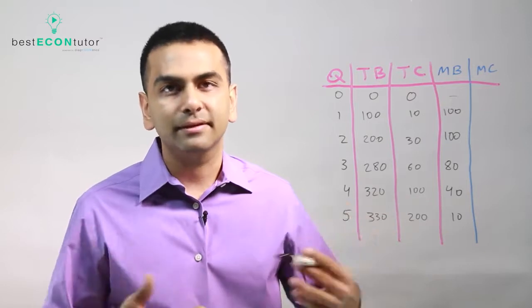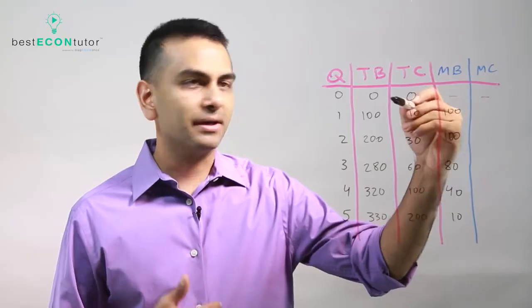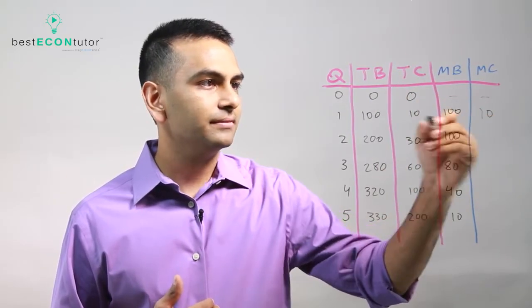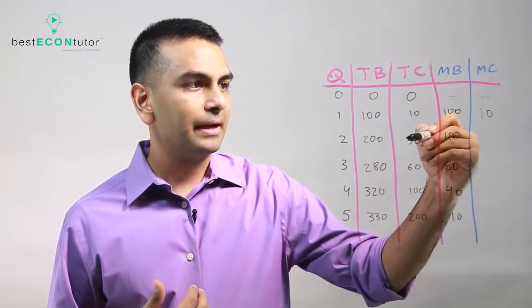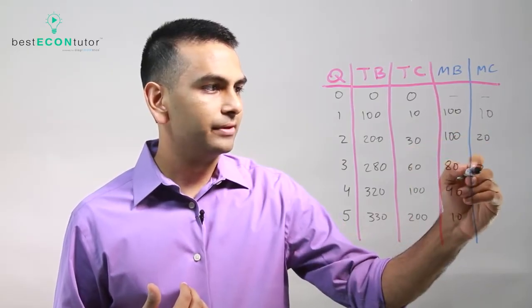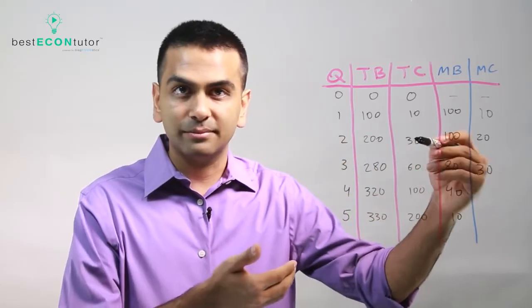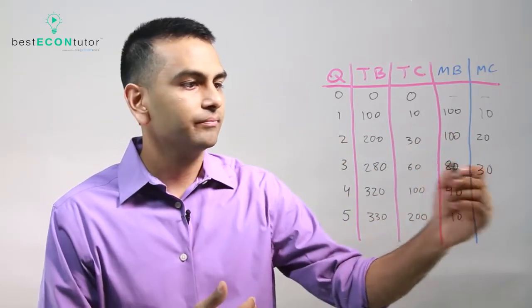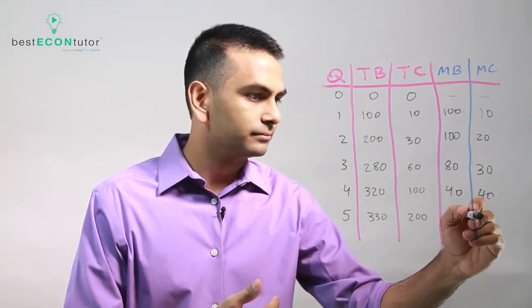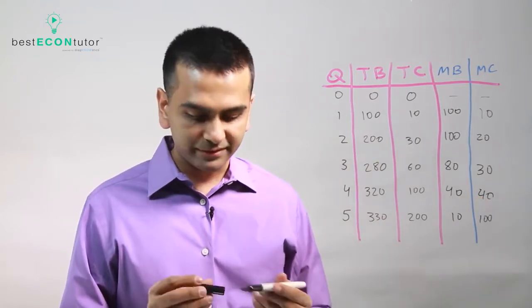Marginal cost typically goes up because by then you're getting more and more tired. Here, notice the first ones usually have a dash because there's nothing before it, but going from zero to one that's the cost of ten. Going from one to two that went up by twenty - ten to thirty - so it went up by twenty. Here it went up by thirty, so the third house added thirty dollars to your cost. Your cost went from thirty to sixty - here it went up by forty and here it went up by a hundred.